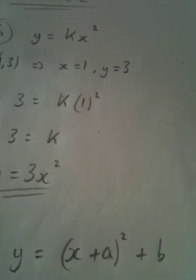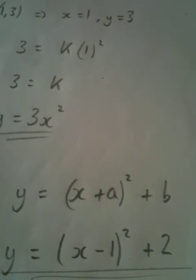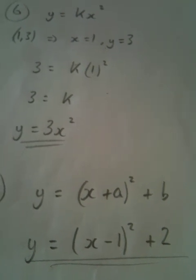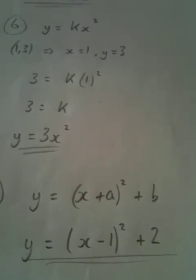And the move of 1 to the right, we put x minus 1 in the bracket. So a move to the right is a negative in the bracket. A move to the left is a positive in the bracket. So we get y equals x minus 1 all squared plus 2.